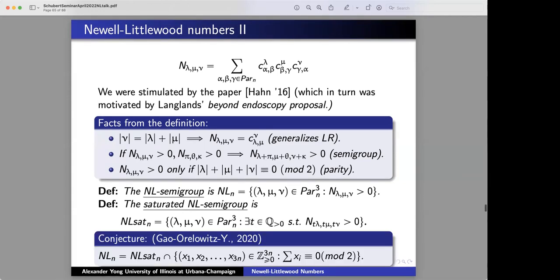which is this defective form of the NL semigroup with this extra existence parameter condition. What we conjectured, Xi Liang Gao, Gidon Avrielowitz and I, is an analog of Knutson-Tao's theorem. And the statement is the following. It's not true that the NL coefficients are saturated in any way that you normally think, that you would know to think about. But the only flaw is precisely the parity constraint.